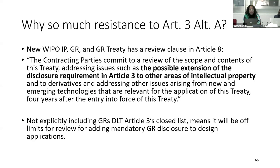Why so much resistance to Article 3, Alt-A? The treaty that we just negotiated in May has a review clause in Article 8. The contracting parties commit to a review of the scope and contents of this treaty, addressing issues such as the possible extension of the disclosure requirement in Article 3 to other areas of intellectual property. If Alt-A is not in Article 3 of the DLT, you carve out designs from possible review — you're not going to even be able to look at it. Just gone.